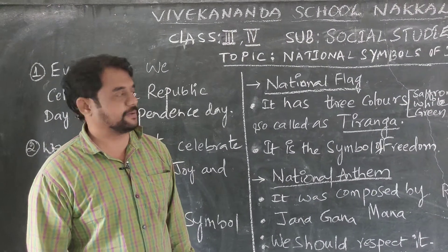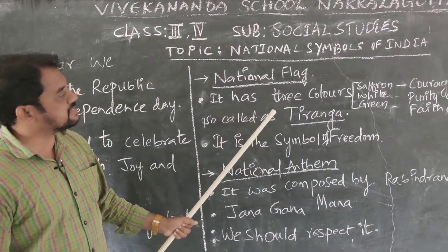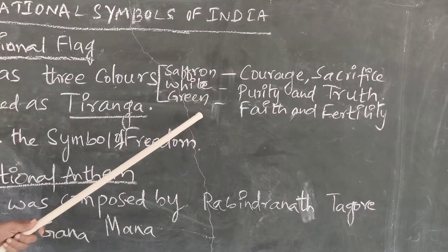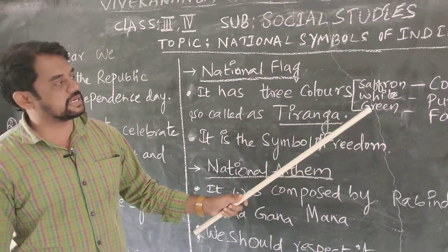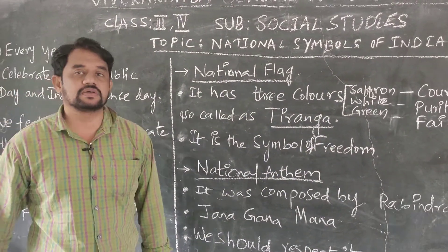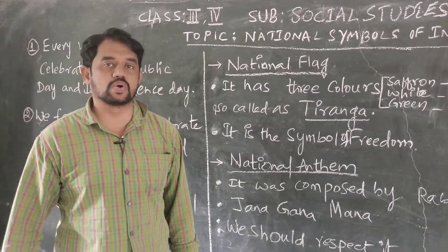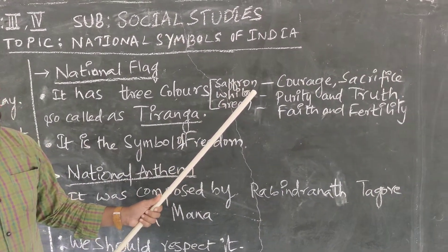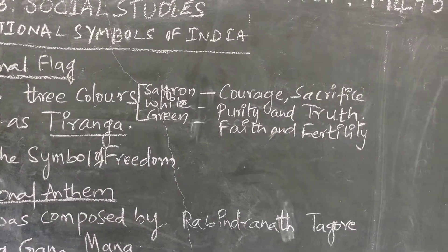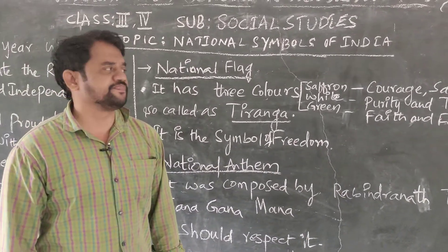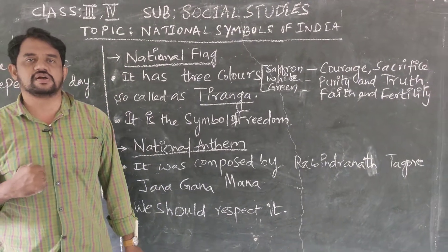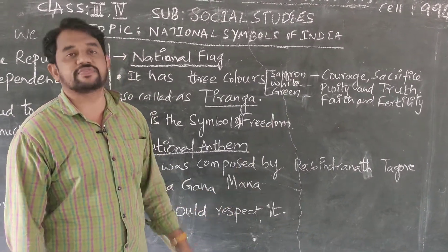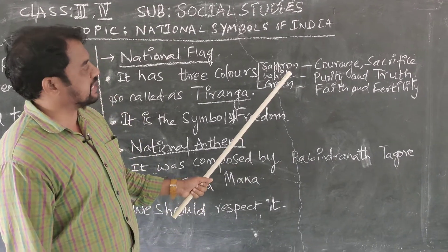Our national flag has three colors. What are those colors? Saffron, white, and green. Along with these three colors, between them we have a Dharma Chakra also. What do these three colors represent? The first color, saffron, represents courage and sacrifice. We the people of India are always very courageous and ready to sacrifice anything for our motherland. That is what the color saffron represents in our flag.